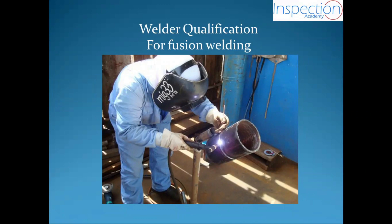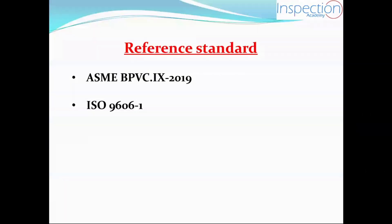We're going to use two references in our course: the ASME code and the ISO code. The ASME code we're going to use is the BPVC — Boiler and Pressure Vessels Code — Section 9, 2019 version. For the ISO code, we're going to use part 9606-1.